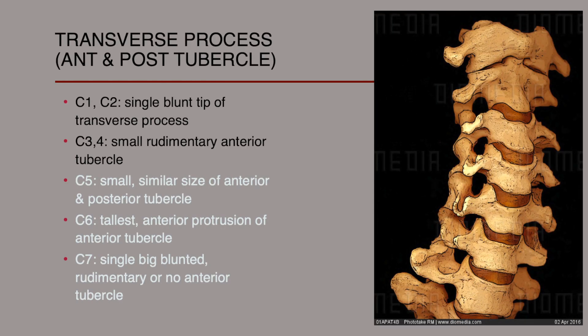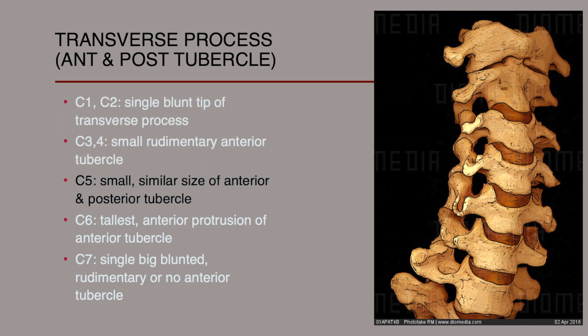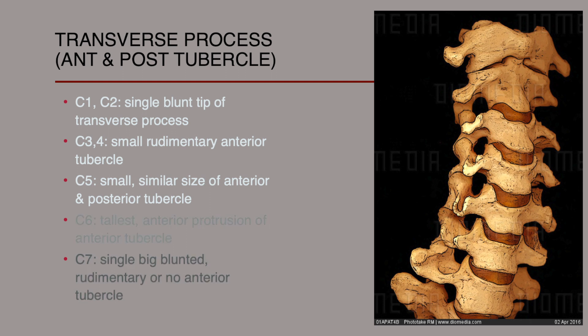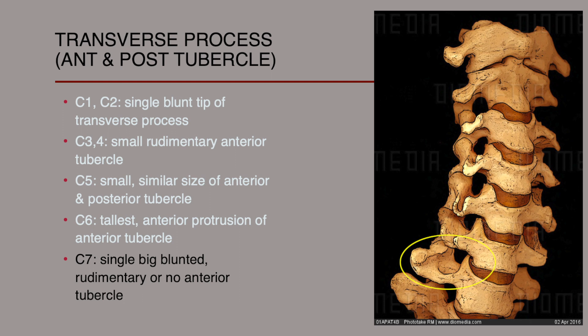Each cervical vertebra has a different shape of transverse process. C1 and C2 have a single blunt tip of transverse process. C3 and C4 have a small rudimentary anterior tubercle. C5 has a smaller size of anterior and posterior tubercle. C6 has the tallest anterior protrusion of the anterior tubercle. C7 has a single, big, blunt tip of transverse process with rudimentary or no anterior tubercle.